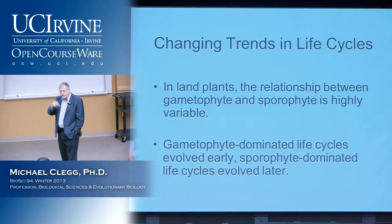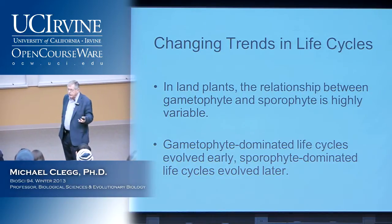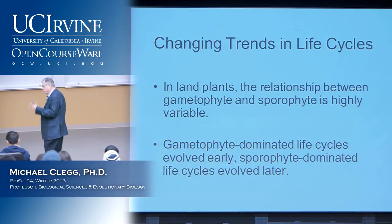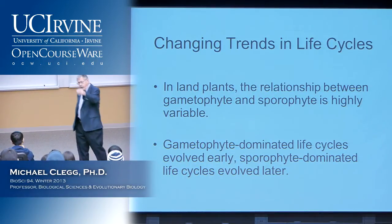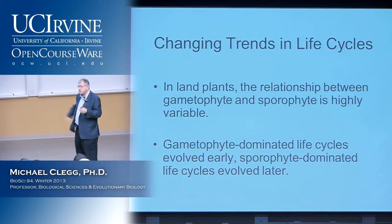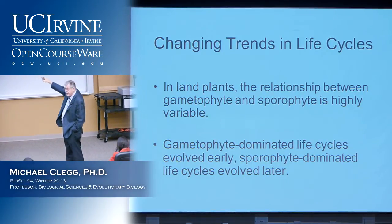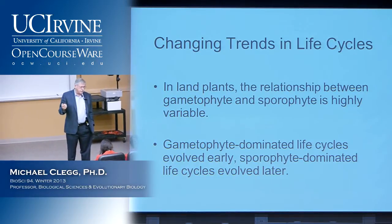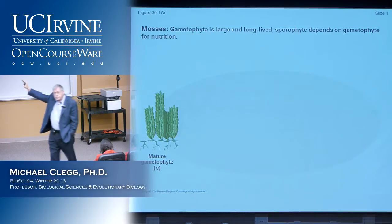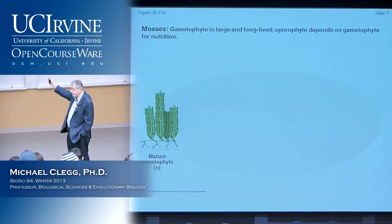There's a trend as we go from earlier plants to more recently evolved plants. In early plants, the gametophytic haploid phase of the life cycle is the dominant phase and the diploid phase is very short. As we reach more advanced plants — starting with ferns up through angiosperms — the sporophytic phase is the dominant phase of the life cycle and the gametophytic phase is shorter and more reduced.